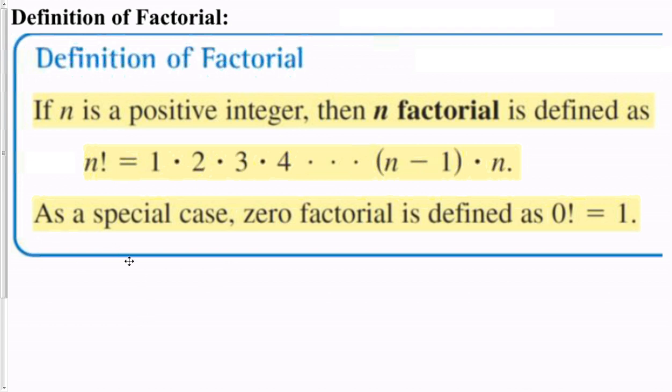Today we are starting part 2 of lesson 8.1. The definition of factorial is, if n is a positive integer, then n factorial is defined as 1 times 2 times 3 times 4 until you reach n.